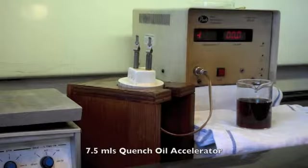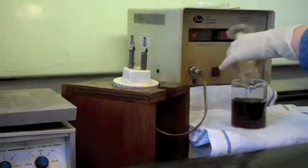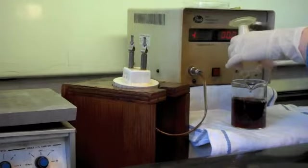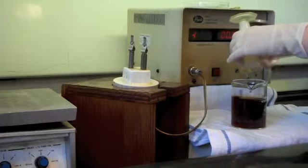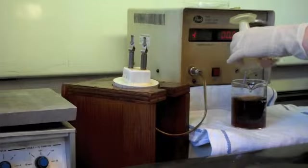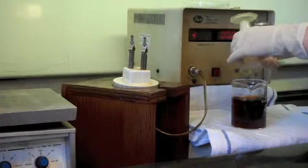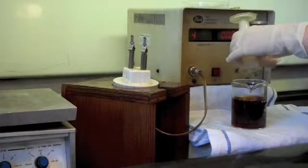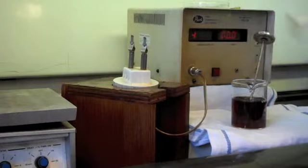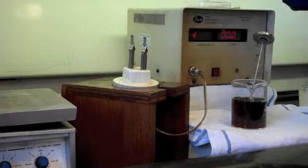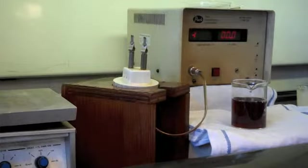I have here 7.5 mils of the quench oil accelerator that's going to go into the sample. And then the test is repeated. Three readings are taken and the average is recorded as the hot wire of the oil. Usually adding 5% accelerator to the oil is going to bring the reading higher than 30 amps, and in that case, that's what we report to the customer.